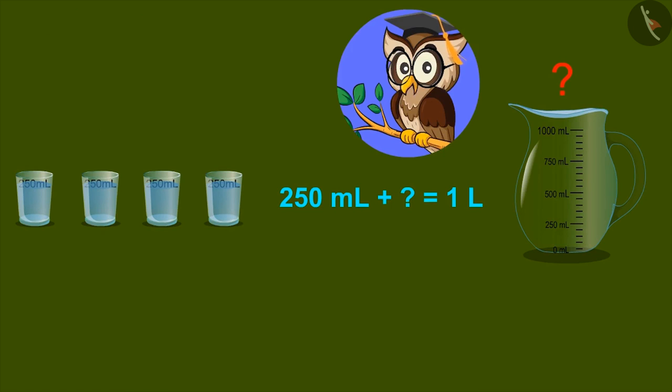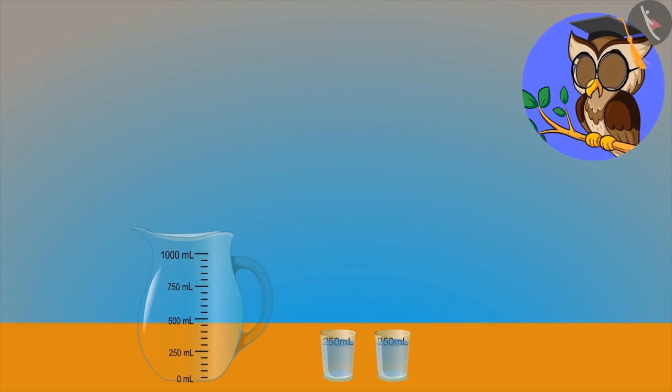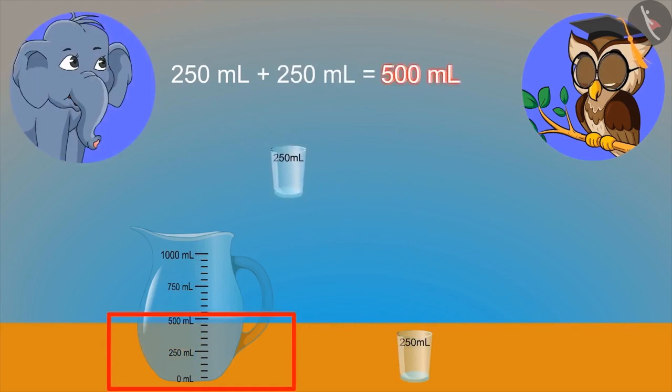So let's see how 250 ml and other units can be combined to form a liter. These two glasses have 250 ml of water. If both of them combine, how much water will we have? 500 ml water. Yes, you are right, elephant.